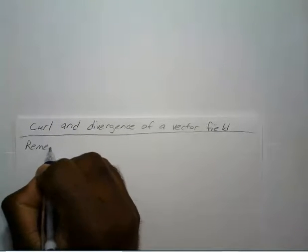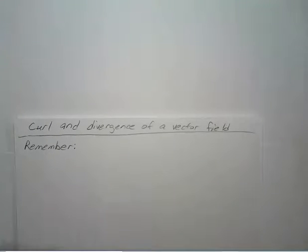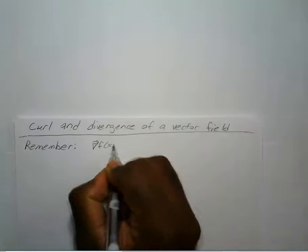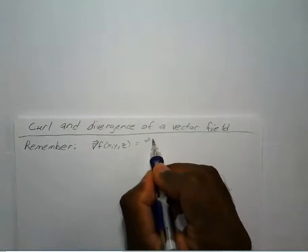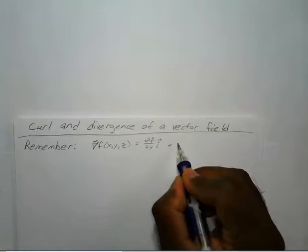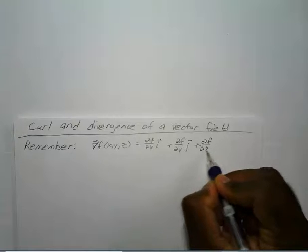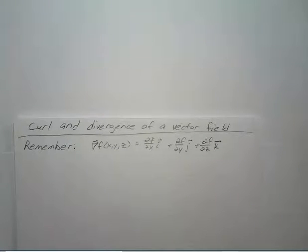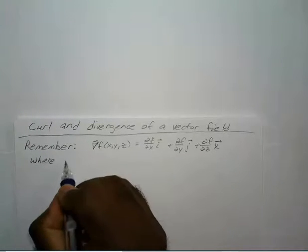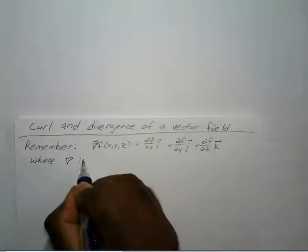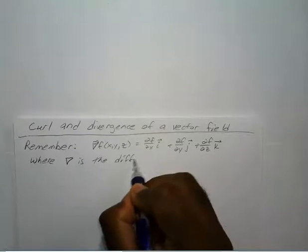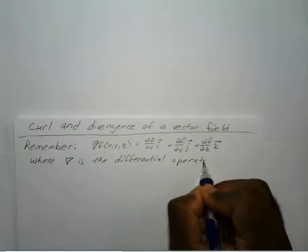Hello everyone. On this video we will be covering the curl and divergence of a vector field. Before we jump into that, I just want you to remember a little bit of notation. If we have the gradient of a function, that's the partial of f with respect to x times the i unit vector, plus the partial of f with respect to y times the j unit vector, plus the partial of f with respect to z times the k unit vector. That symbol — it looks like an upside-down triangle — is the differential operator del.